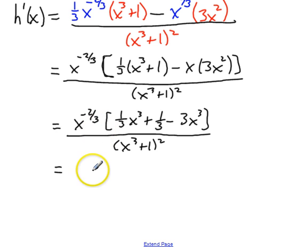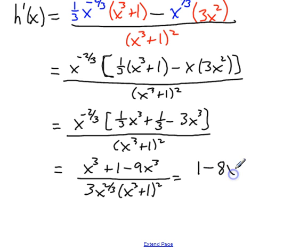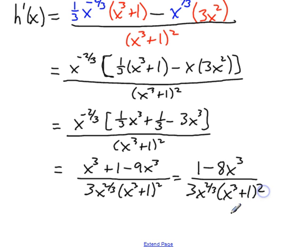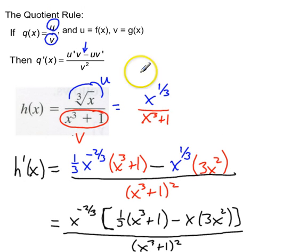Factoring out a 1 third, I get x cubed plus 1 minus 9x cubed, all over 3x to the 2 thirds times x cubed plus 1 squared. And finally, we get 1 minus 8x cubed over all that. So that's an example of using the quotient rule. Just remember: the derivative of a quotient is the derivative of the numerator times the denominator, minus the numerator times the derivative of the denominator, over the denominator squared.